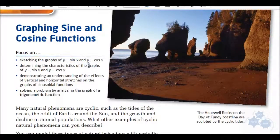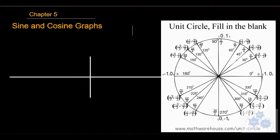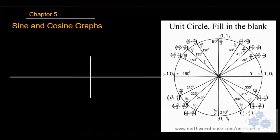We're going to be sketching graphs of sine and cosine today. Here's how we're going to do that — we're going to take a look at our old friend the unit circle. We're also going to transfer the coordinates for each angle for sine and for cosine onto a graph. This is just a regular old graph right here. That's y, and this is the x value. We do have some negative and positive values for both x and y.